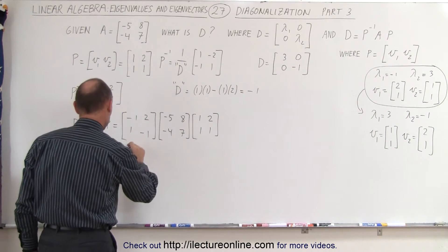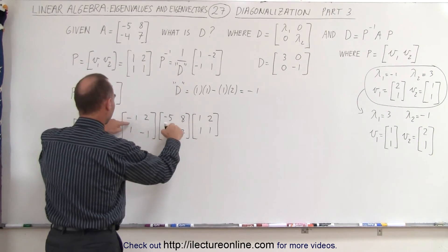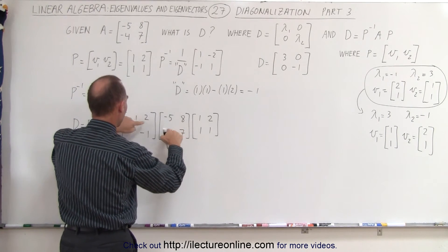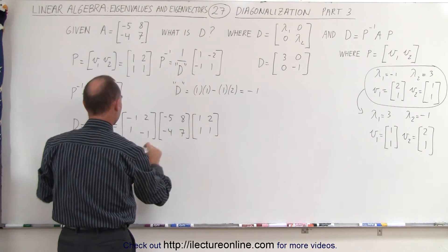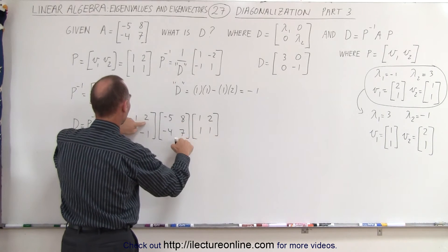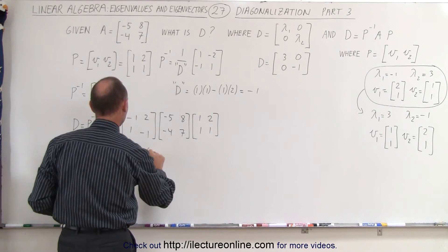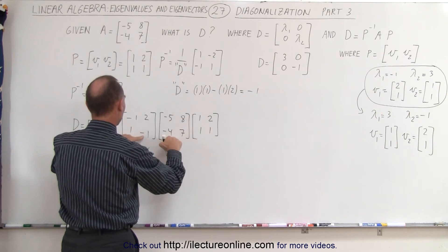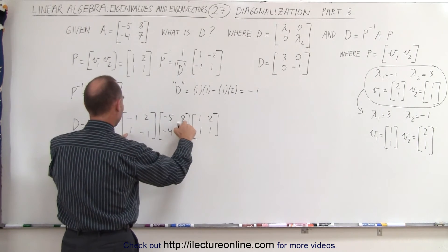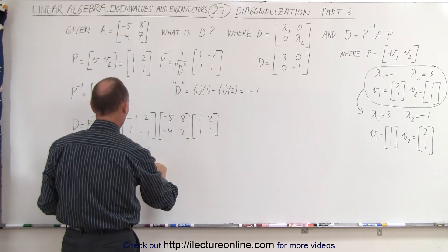This is equal to, multiplying these out, you get 5 minus 8, that's minus 3. Minus 8 plus 14 would be plus 6. Minus 5 plus 4 is a minus 1. 8 minus 7 is 1.